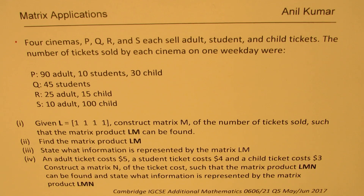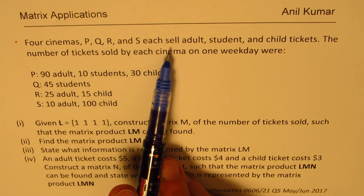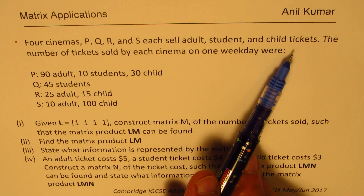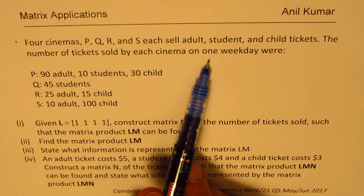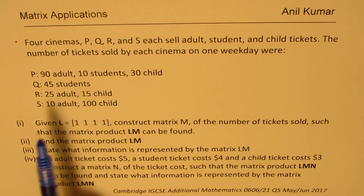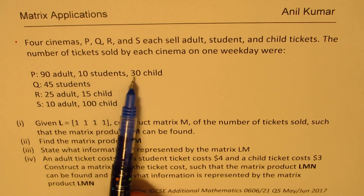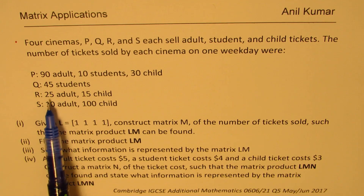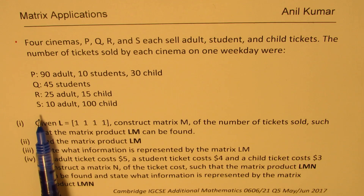The question is: four cinemas P, Q, R and S each sell adult, student and child tickets. The number of tickets sold by each cinema on one weekday were — P: 90 adults, 10 students, 30 child; Q: 45 students; R: 25 adults, 15 child; S: 10 adults, 11 child.